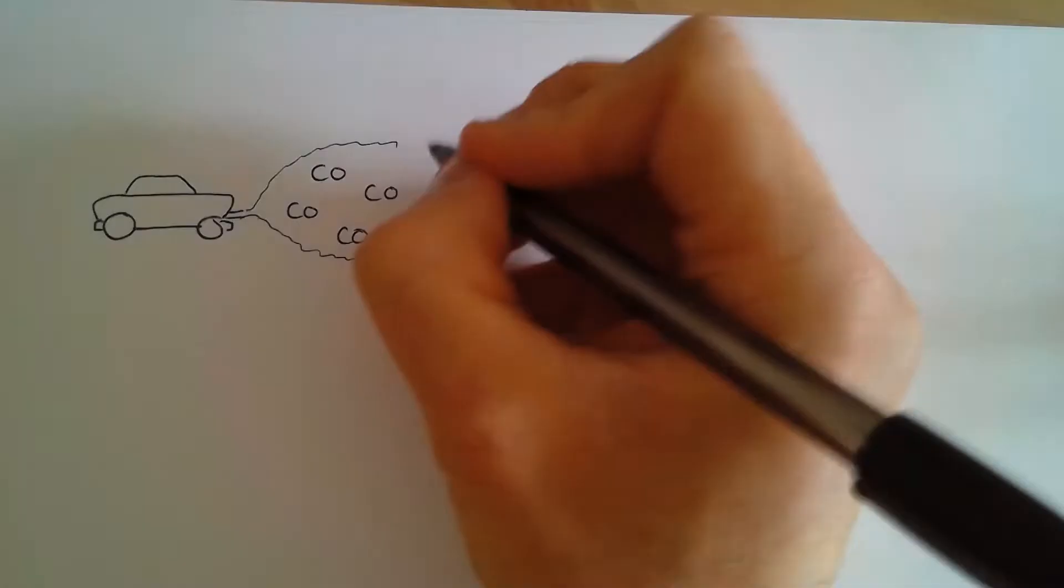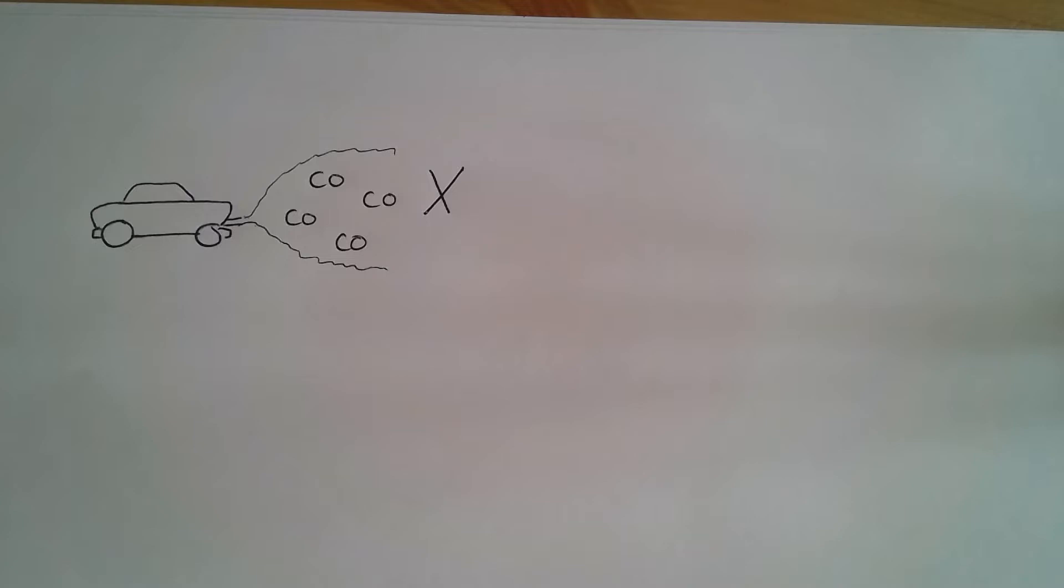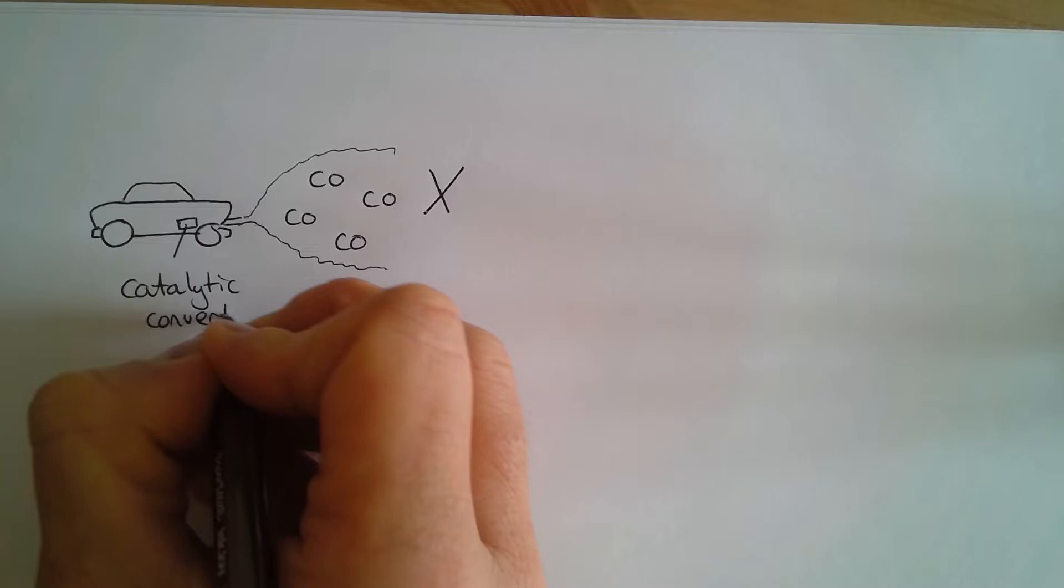Now carbon monoxide is bad for us. Carbon monoxide is a toxic pollutant gas and we don't want that going into the atmosphere. So cars have something in them that's going to stop that, and it's located near the exhaust and it's called a catalytic converter.